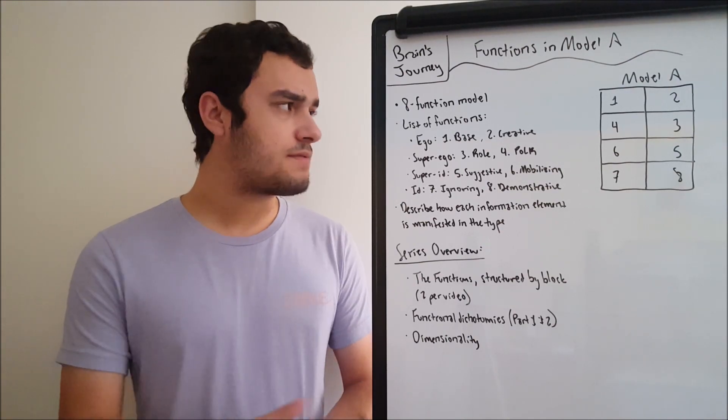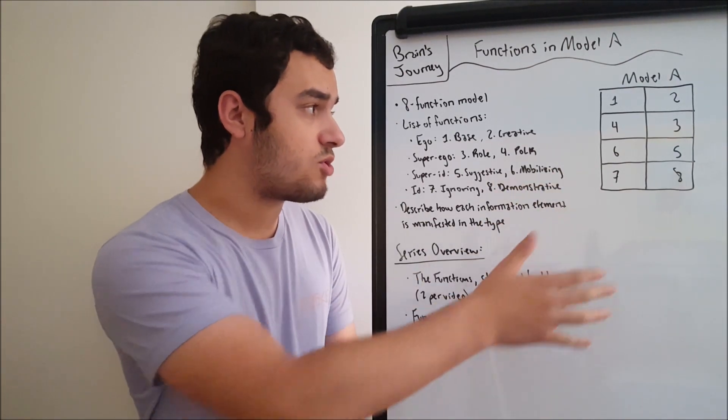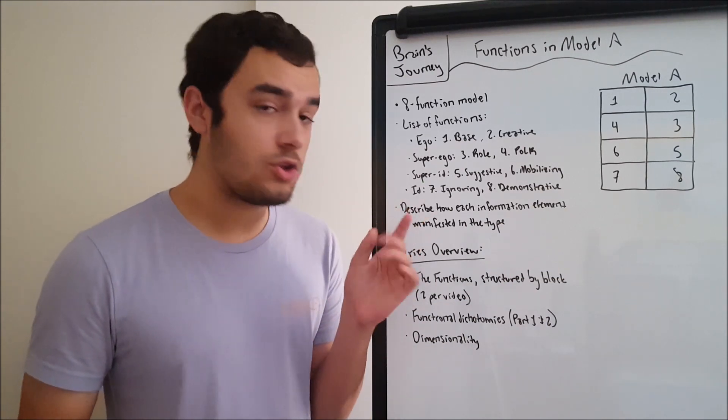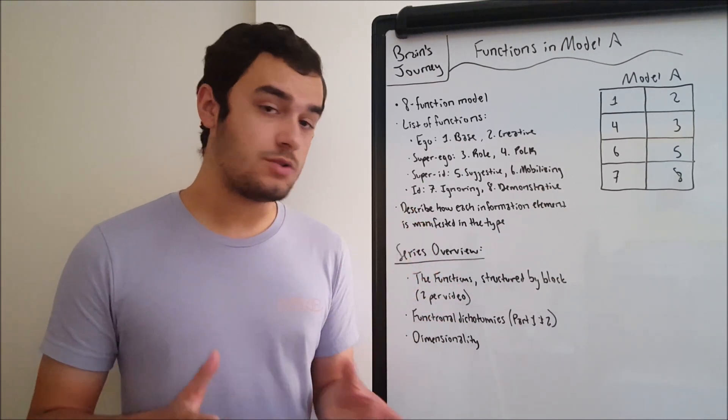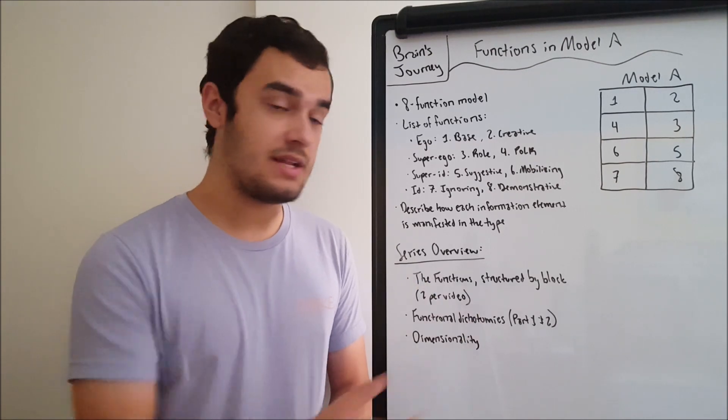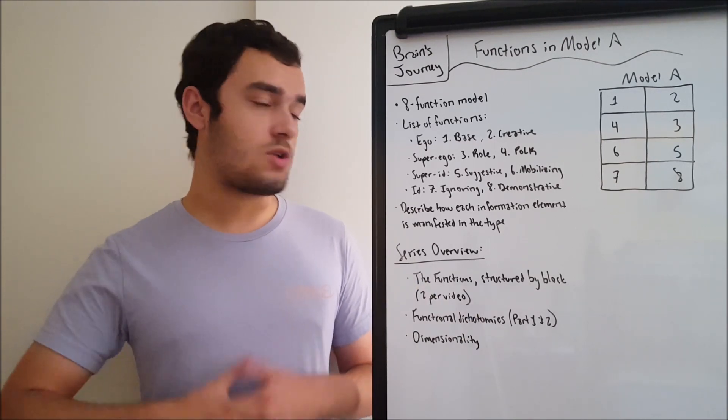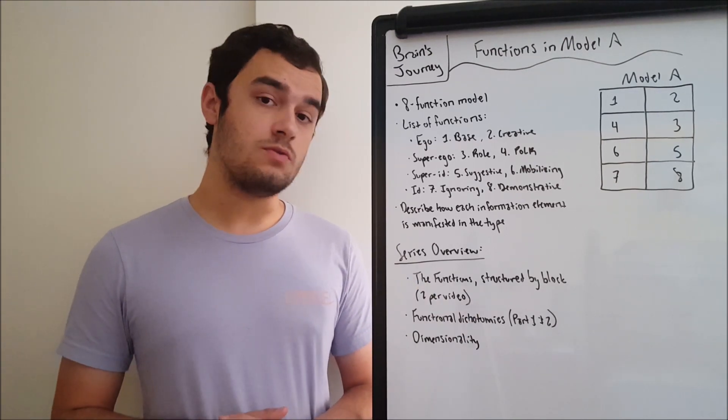You'll immediately see that the functions are not necessarily in super numerical order. It kind of has an alternating pattern. We'll see why that is in the future, but for now, this is just the way that it is. We have things called blocks, which are groups of two functions each.